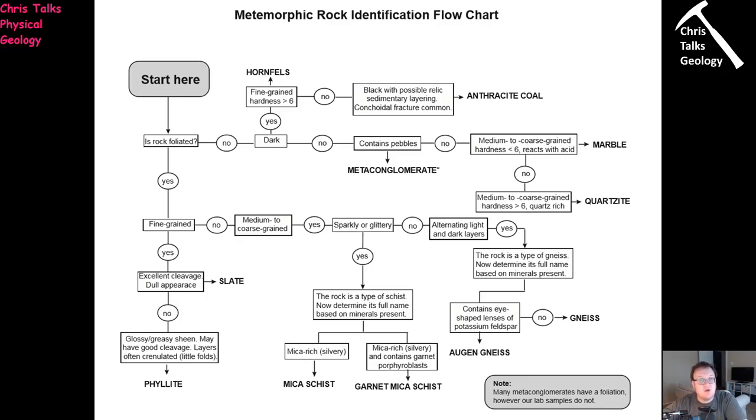If the rock is made up almost exclusively of mica, that's going to be a mica schist. If it's essentially dominated by mica but also has some garnet mixed in, it's going to be a garnet schist. Note the term porphyroblasts — this means we have large garnet crystals in our sample, larger than the other crystals, so they're going to stand out and be really noticeable. Garnet is a kind of very deep red colour.